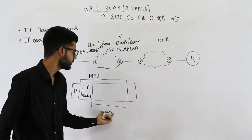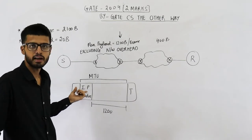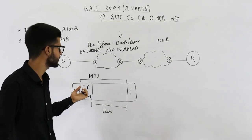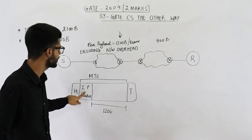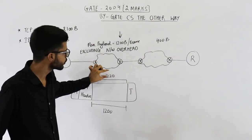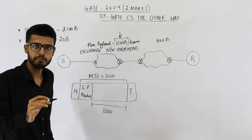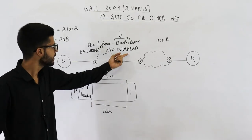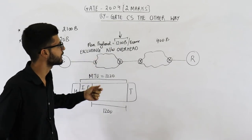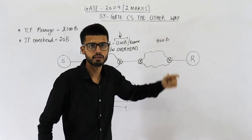So what will be the MTU? MTU will be the maximum data that the IP packet can contain plus the header size. Header size for this question is 20 bytes — they are assuming the smallest header. So 1200 plus 20 will be 1220. So for this first network, MTU is 1220 and 1200 is the maximum data which the network layer packet can carry. For the second network, MTU will be 420 and the maximum data the network layer can carry is 400.